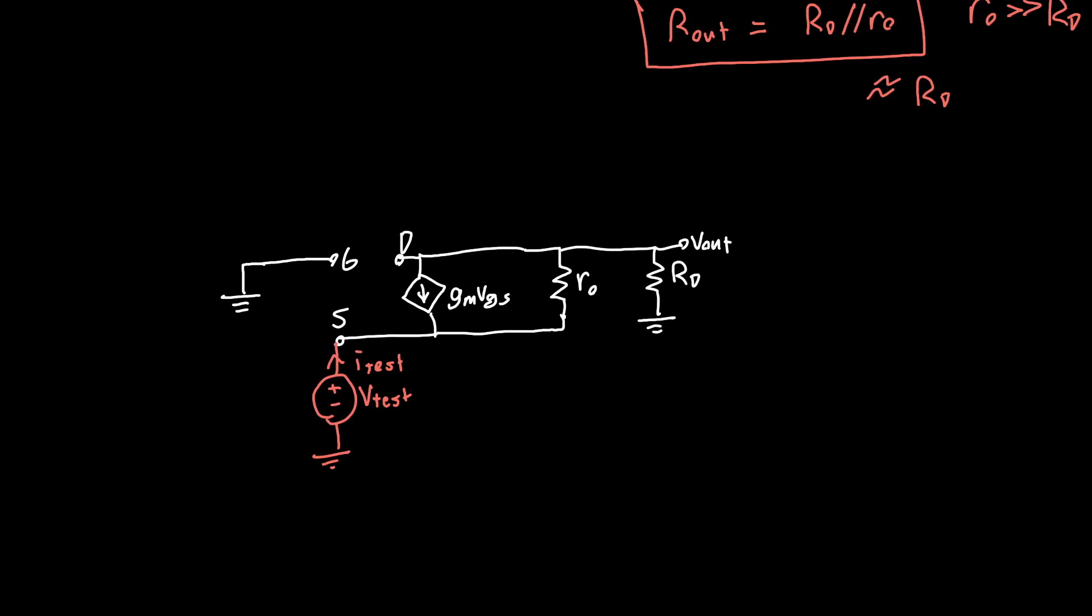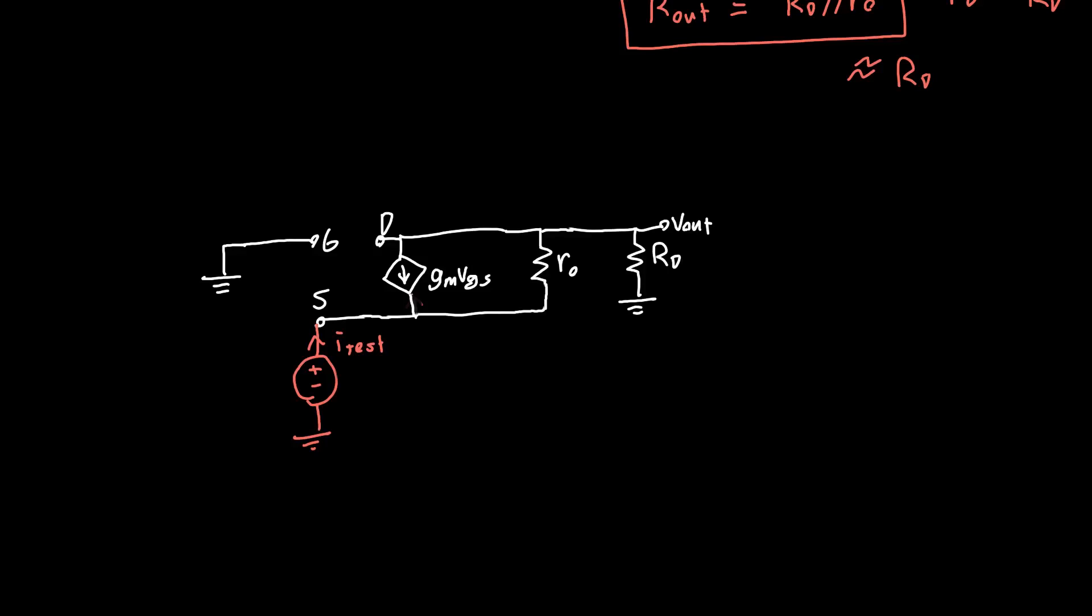But here, that's not relevant, because we're just going to be applying a test voltage at the input, V test, and measuring the current flowing out of it, I test. This gate, because this is a common gate amplifier, is grounded. This doesn't look too bad, and indeed, it's not terrible.